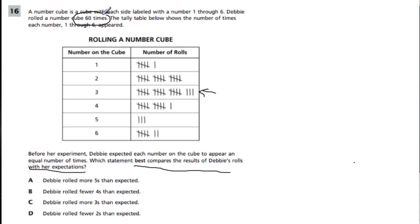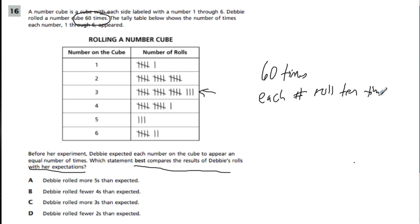She rolled the die 60 times, so her expectation was each number rolls 10 times — six numbers, 10 times each. Did she roll more fives than expected? No, she rolled 3 and expected 10. Did she roll fewer fours than expected? No — she rolled 11 and expected 10, so she rolled more. Did she roll more threes than expected? Yes — she rolled 18 threes, more than the 10 she expected. That's the answer. The last option, fewer twos, is false — she rolled 15 and only expected 10. Answer is C.